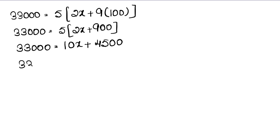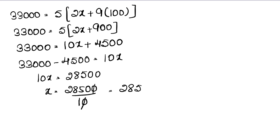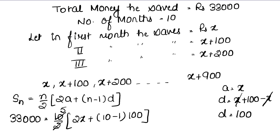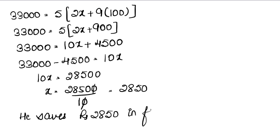So 33,000 equals 10x + 4500. Subtracting 4500 from both sides gives 10x equals 28,500, so x equals 28,500 divided by 10, which gives x equals 2850. Since we let x be the first month's savings, he saves rupees 2850 in the first month. Answer.